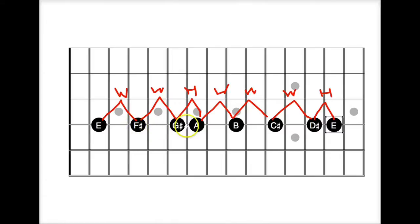The E major scale has four sharps: F sharp, G sharp, C sharp, and D sharp. And remember that we only want to use one letter name per scale, meaning one E, one F, one G, one A, one B, and so on.